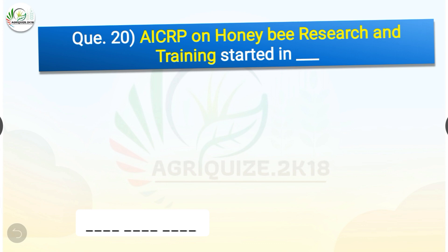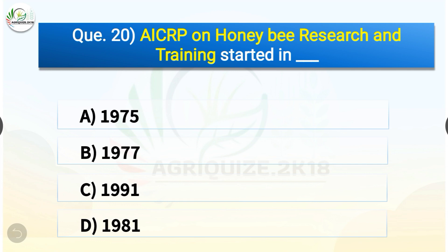Question number twenty: AICRP on honeybee research and training started in which year? The options are: 1975, 1977, 1991, or 1981. The correct answer is option D — 1981. AICRP on honeybee research and training started in 1981.